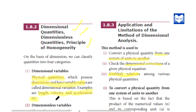Dimensional variable. We will see the definition. Very simple. A physical quantity that has dimension and a variable value is called a dimensional variable. There is dimension, and the value is variable — that is a dimensional variable.